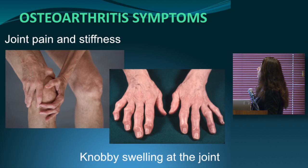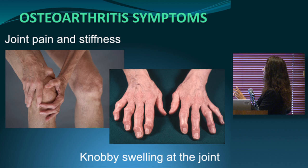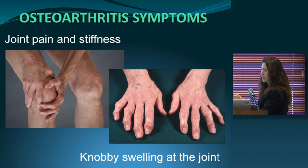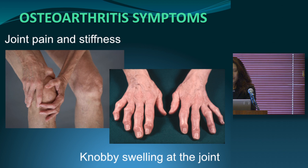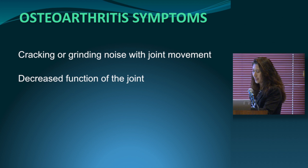Osteoarthritis symptoms include joint pain and stiffness, joint enlargement — becoming knobby — and joint swelling. In the fingers, these enlargements are called Heberden's nodes at the distal joints and Bouchard's nodes at the middle joints. You can also hear cracking or grinding noise with joint movement, and there is decreased function of the joints.